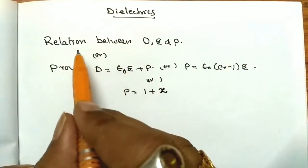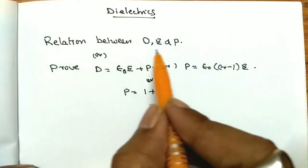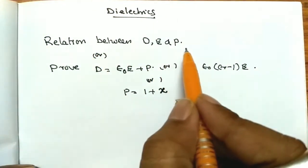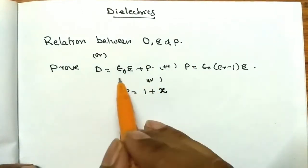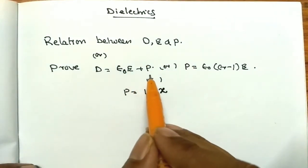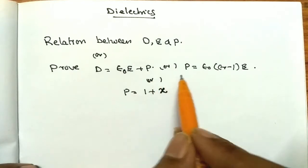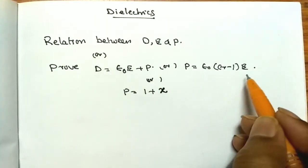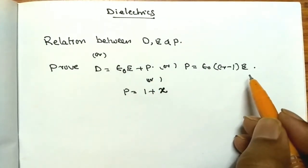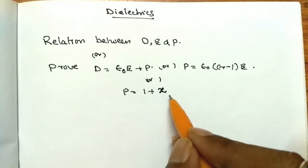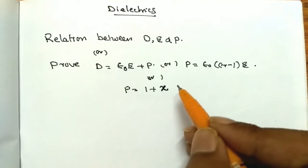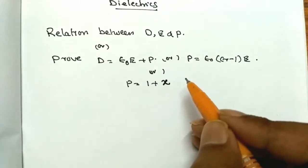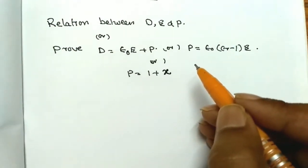Today my topic is the relation between D, E, and P — or to prove that D is equal to epsilon naught E plus P, or P is equal to epsilon naught into (epsilon r minus 1) into E, or P is equal to chi into E. This topic belongs to dielectrics.